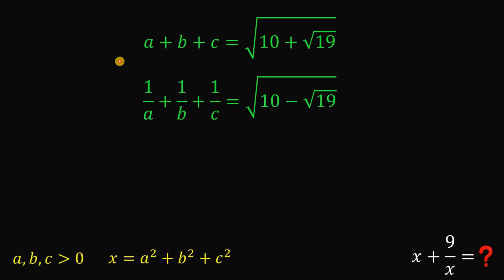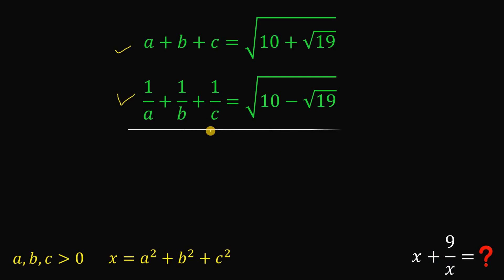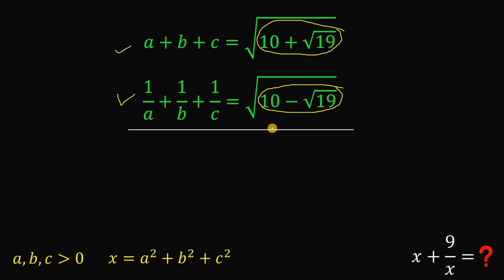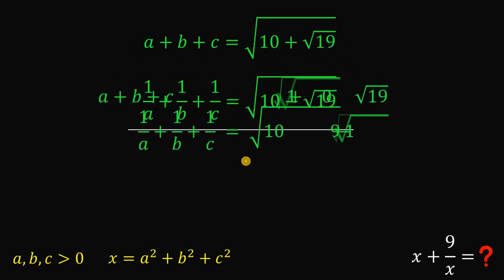Alright, so given these two equations in three variables, and also given that A, B, and C are all greater than 0, and X equals A squared plus B squared plus C squared, the goal is to find the numerical value of X plus 9 over X. To answer this, what we're going to do is multiply these two equations. The clue is that square root of (10 plus square root of 19) and square root of (10 minus square root of 19) are conjugates of each other — if we multiply them, we get a nice result. So let's multiply these two equations.